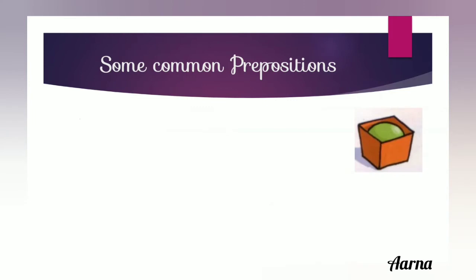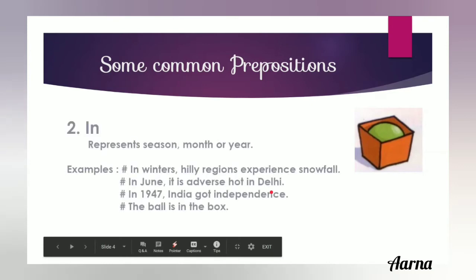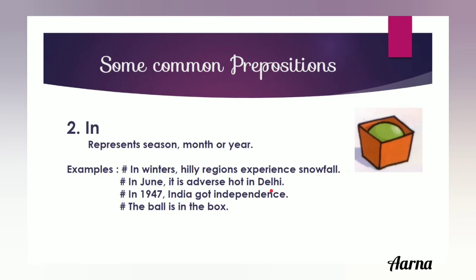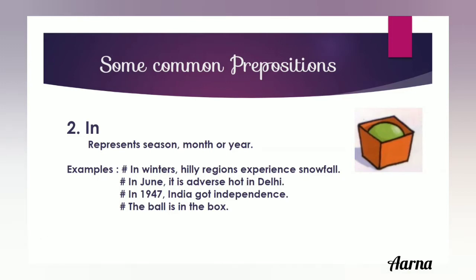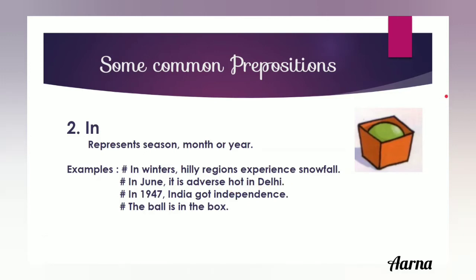The second preposition is 'in'. It represents season, month, or year. It may also describe an object that is within the radius of something. For example: in winters, in June, in 1947 — describing season, month, or year. 'The ball is in the box' — the ball is within the radius of the box, so we use 'in'.